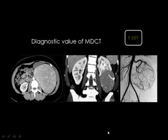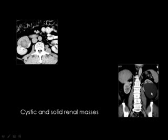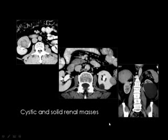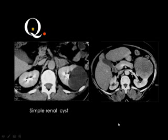Masses in the kidney are evaluated similarly to liver masses. A cystic mass is considered benign; a solid mass is considered malignant. With multi-detector CT and angiographic technique, you can see that a solid mass arises from the lower pole of the kidney and is supplied by malignant circulation. A benign lesion contains water — a simple renal cyst — while a malignant lesion contains soft tissue, representing renal cell carcinoma. Sometimes both lesions coexist in the same kidney.